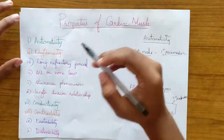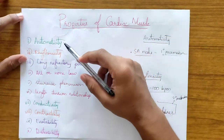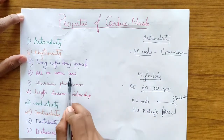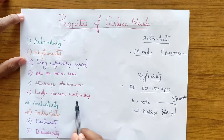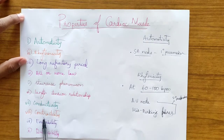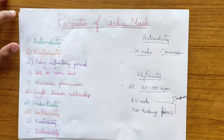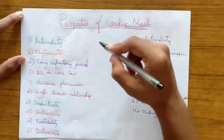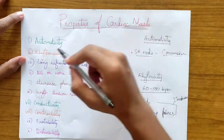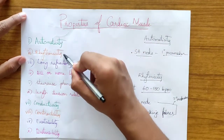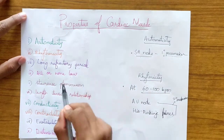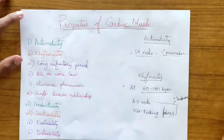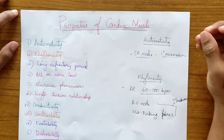Some of the main properties of the cardiac muscle are: automaticity, rhythmicity, long refractory period, all-or-none law, staircase phenomenon, length-tension relationship, conductivity, contractility, excitability, and distensibility. In this video we will be covering six main properties: automaticity, rhythmicity, long refractory period, all-or-none law, staircase phenomenon, and length-tension relationship.